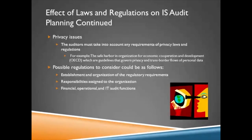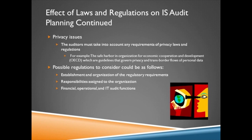What are some other effects of laws and regulations? Privacy issues — as an auditor, you need to take into account the requirements of privacy laws and regulations. For example, the Safe Harbor and the Organization for Economic Cooperation and Development, the OECD, have guidelines that govern privacy and trans-border flows of personal data. We need to understand what those regulations are and how they apply to that organization. Some regulations to consider could include the establishment and organization of regulatory requirements, the responsibilities assigned to organizations, and any financial, operational, and IT audit functions that fall underneath those regulations.